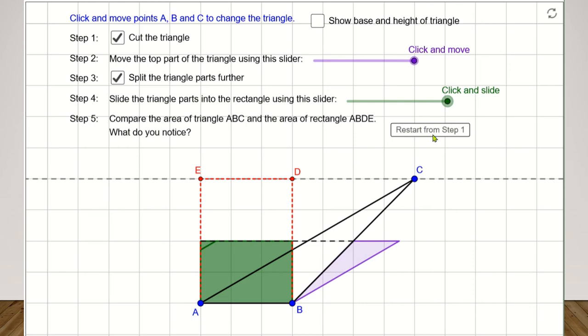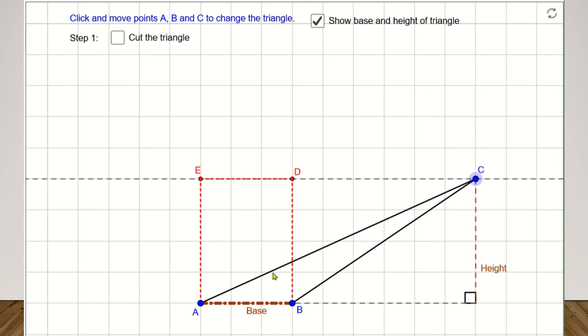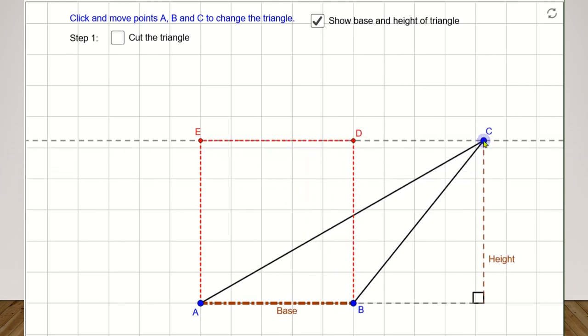You can click on the Restart from Step 1 button to restart. In this activity, you can click on this checkbox to show the base and the height of the triangle. Then, you can click and move points A, B and C to change the triangle.